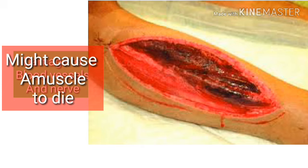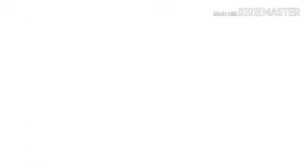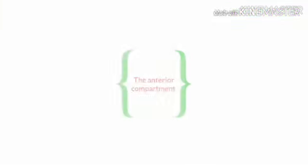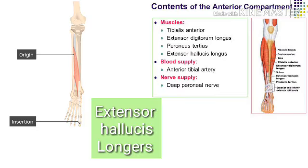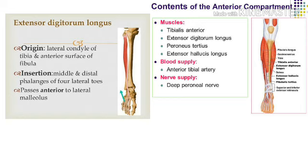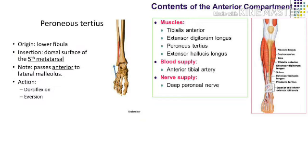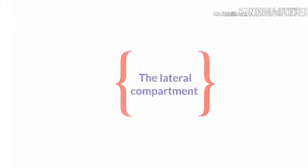So if you want to remember the muscles of the lower leg, divide them into compartments. The anterior compartment contains: tibialis anterior, extensor hallucis longus, extensor digitorum longus, and peroneus tertius. The neurovascular structures that supply the anterior compartment are the fibular (peroneal) nerve and the anterior tibial vessels.